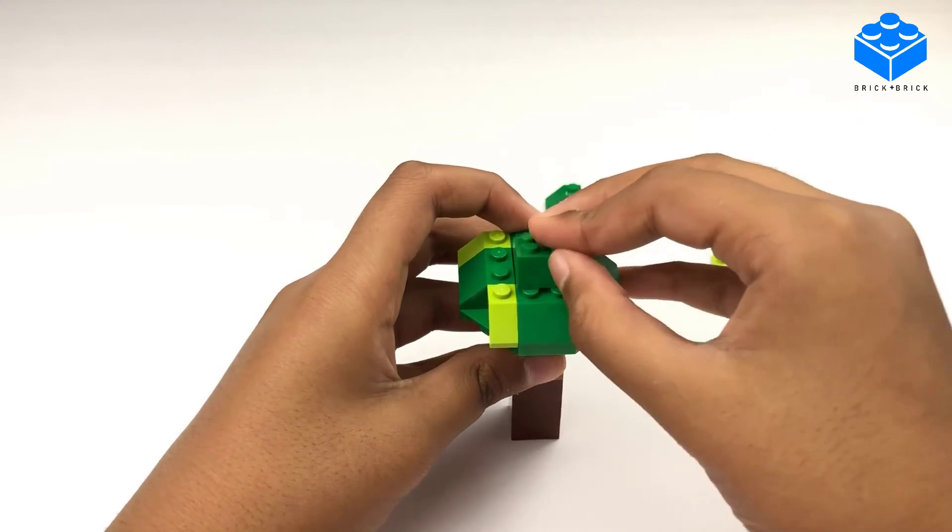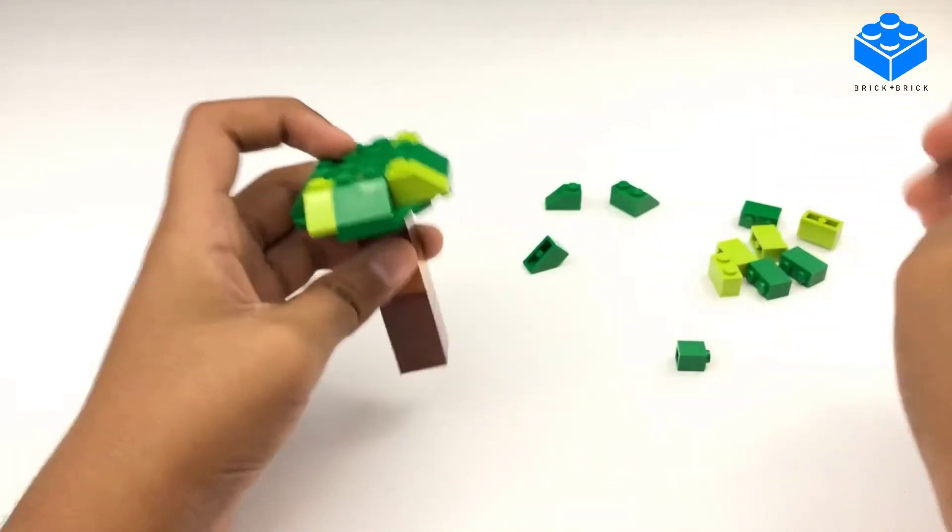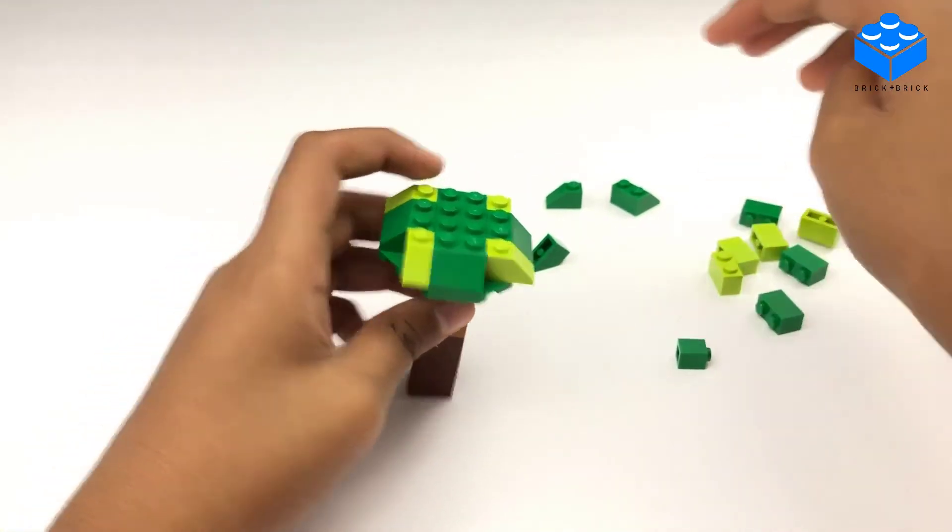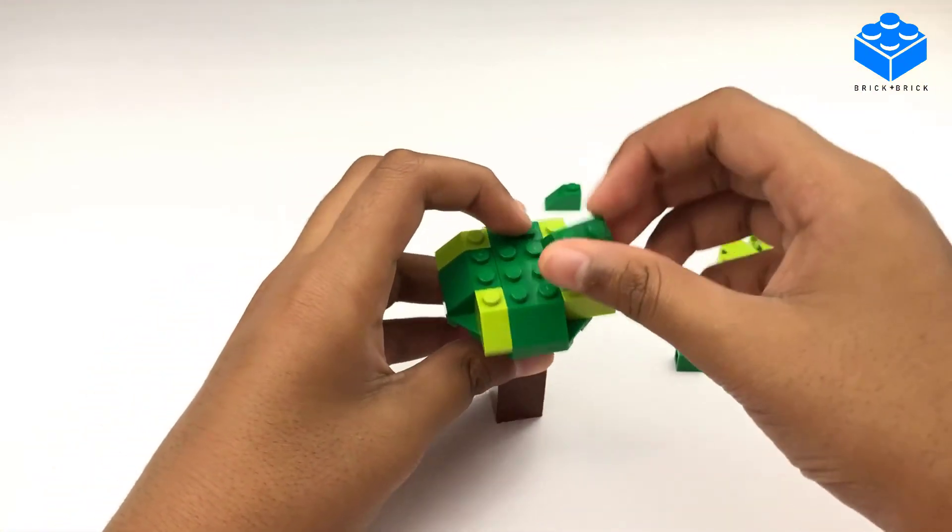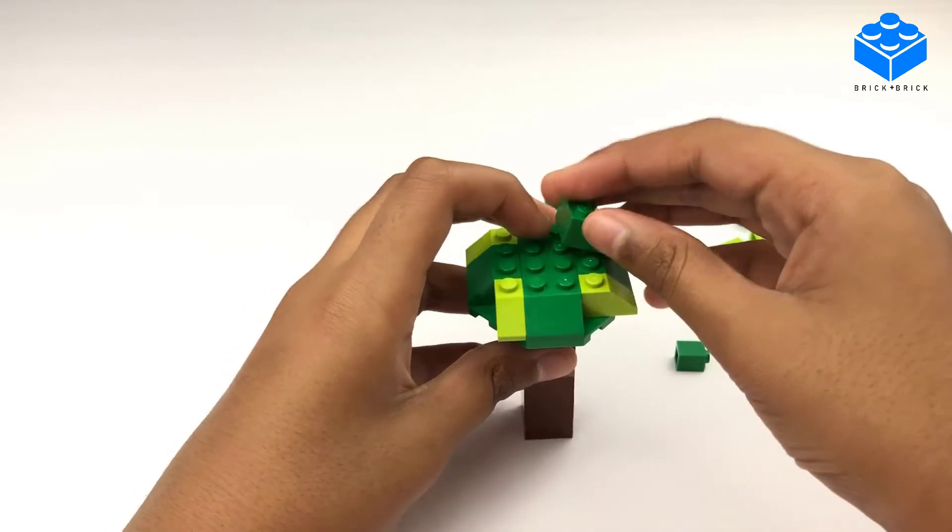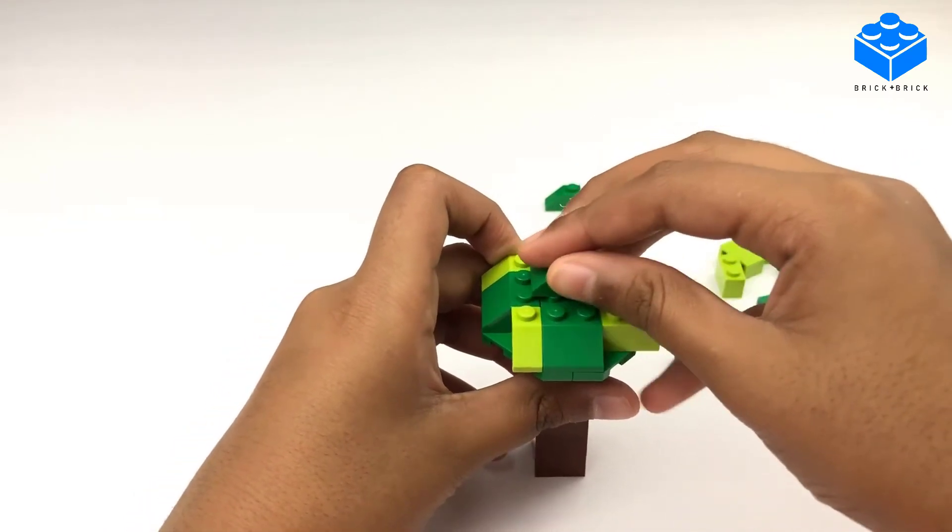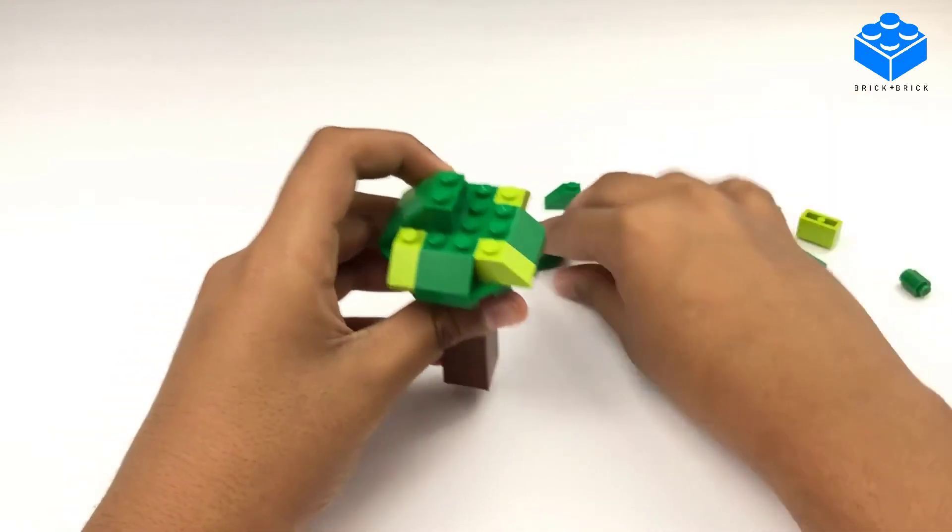Next, you put your two by two here, which is your last one of that piece. Next, you can customize it. You can customize the top of the tree whatever way you'd like.